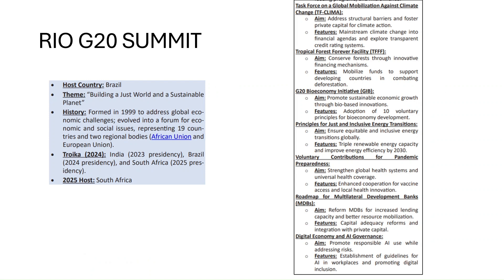Recently, the G20 Summit of this year's edition was held in Brazil's Rio de Janeiro city. The theme was 'Building a Just World and Sustainable Planet.' The G20 was formed in 1999 to address global economic challenges, and it now includes 19 countries and two regional bodies — the African Union and the European Union.